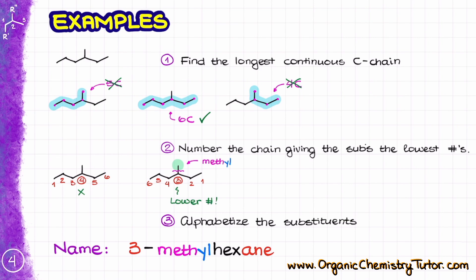Notice that I have to specify the location of my substituent. When writing your name, separate numbers from letters by dashes, and if you have multiple numbers, separate them by commas. Do not put any spaces or other punctuation marks in your name. For now, we only use a dash between numbers and letters, and commas between numbers — that's all. So all of our names are going to be one tremendously long word.